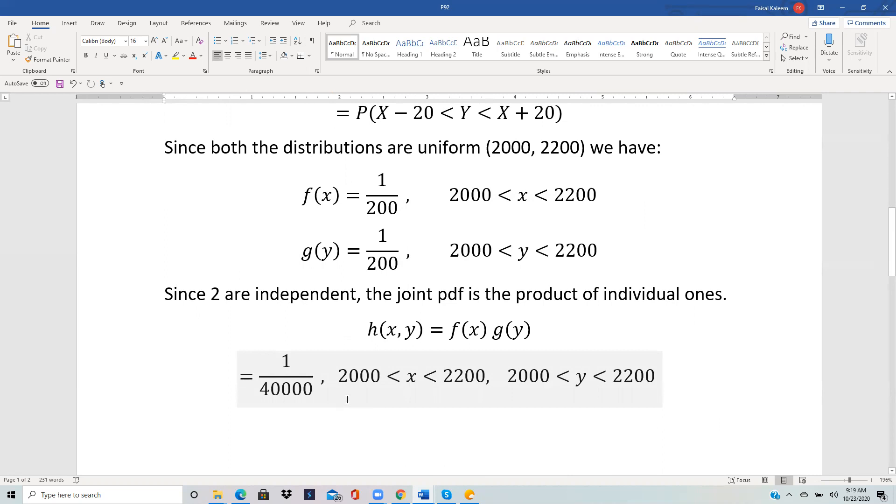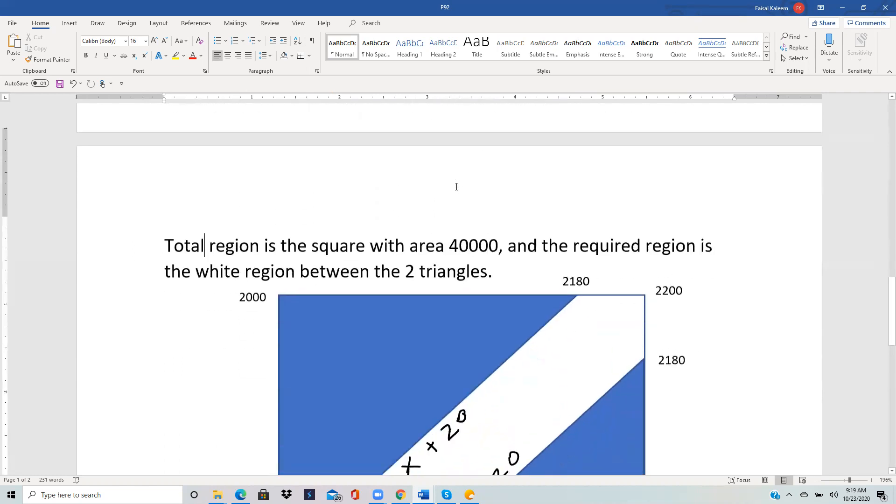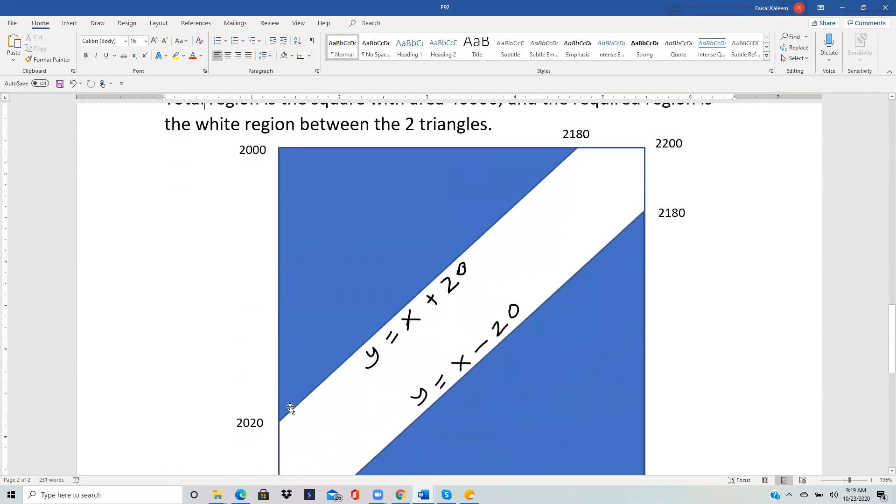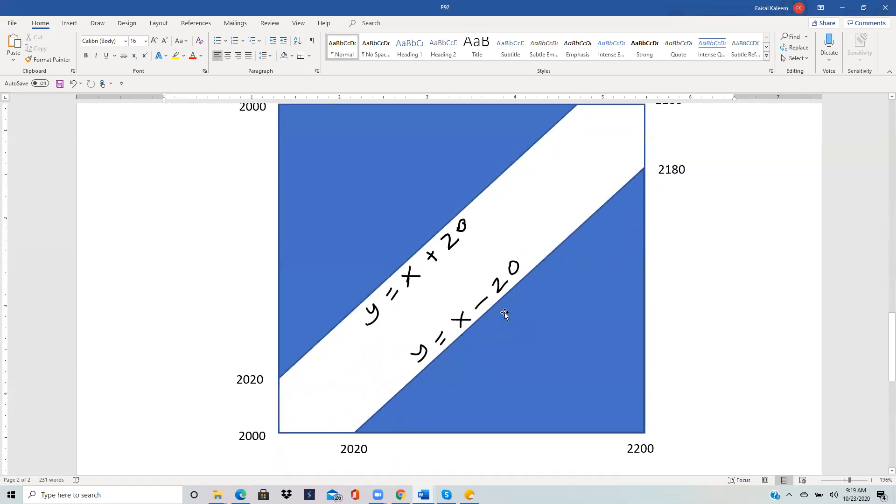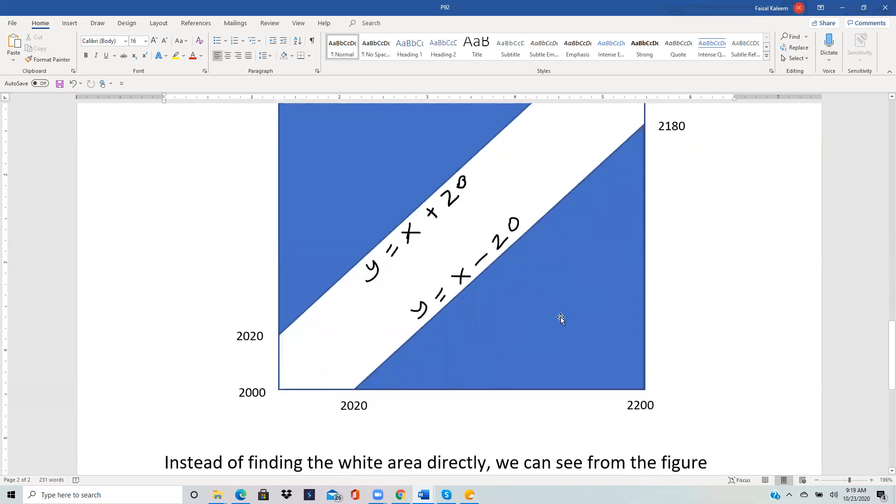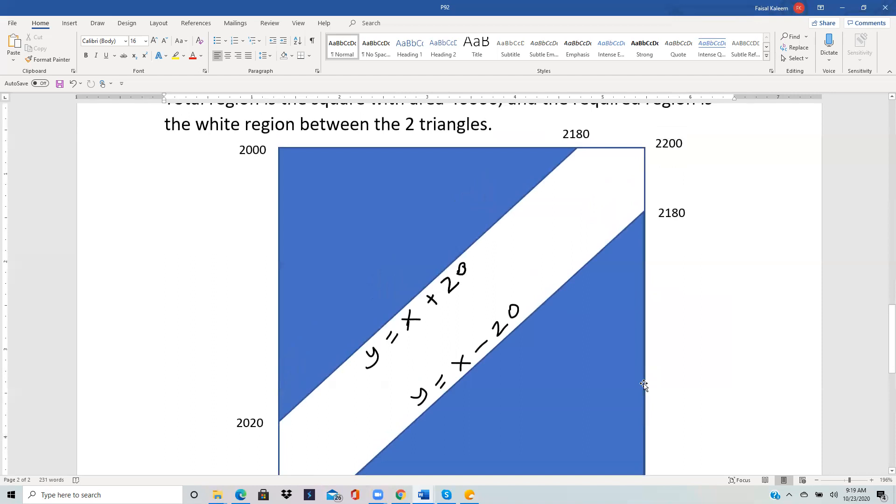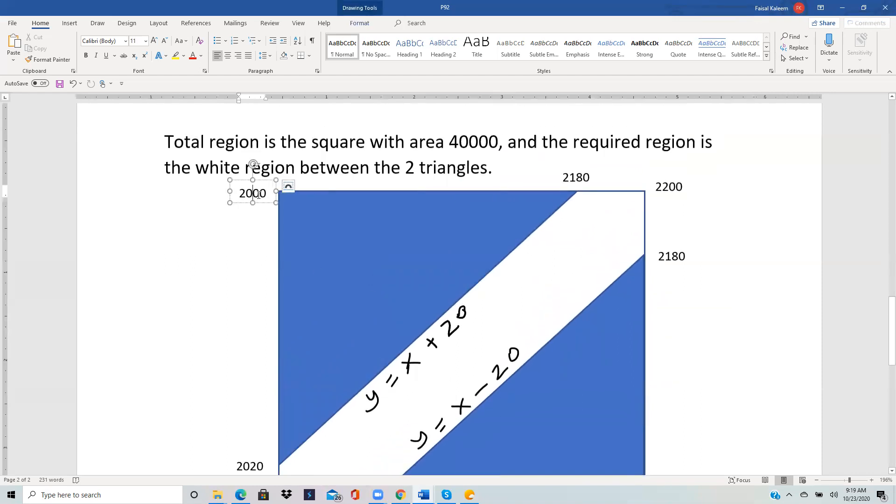We want the portion where Y is between X minus 20 and X plus 20. If we draw the two lines, this is a line Y equals X plus 20 and this is a line Y equals X minus 20. We draw them within the whole rectangle, which is our universe, X going from 2000 to 2200 and so is Y.